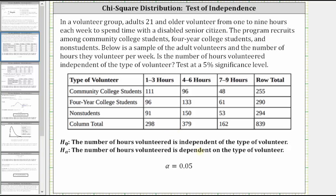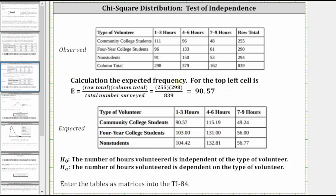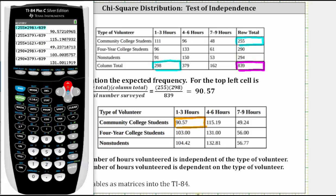The given table gives us the observed values. Our first step is to find the expected values from the observed values. The calculation for the expected frequency is the row total times the column total divided by the total number surveyed. For example, to find the expected value for community college students who volunteer one to three hours, we multiply the total from row one and column one and divide by 839. The row total for row one is 255, the column total is 298, and the total surveyed is 839. So 255 times 298 divided by 839 is approximately 90.57.